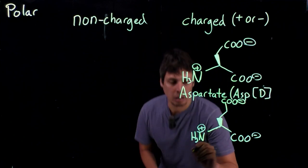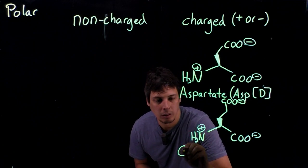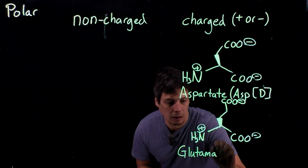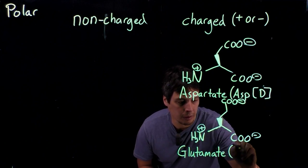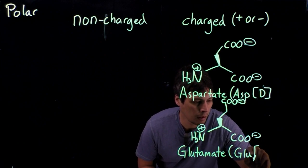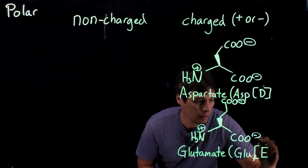So this one is called glutamate. The three-letter code is G-L-U, and the one-letter code is E.